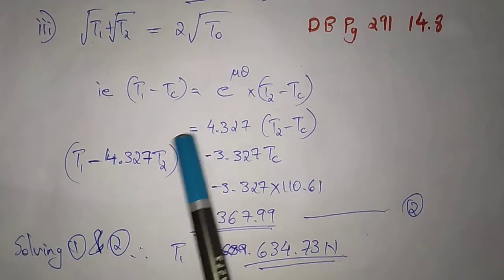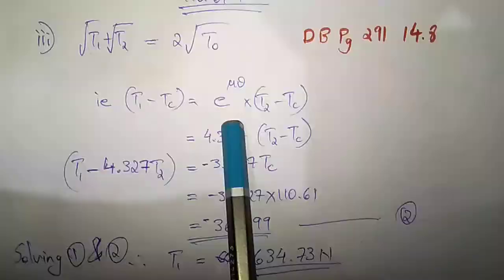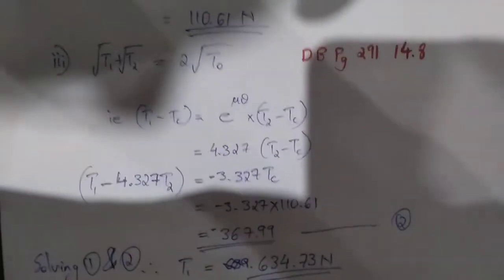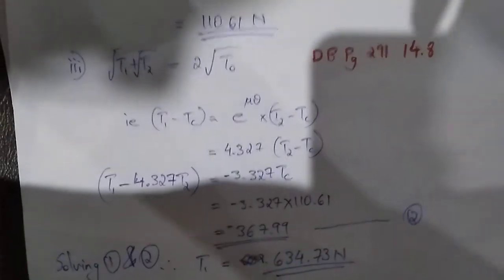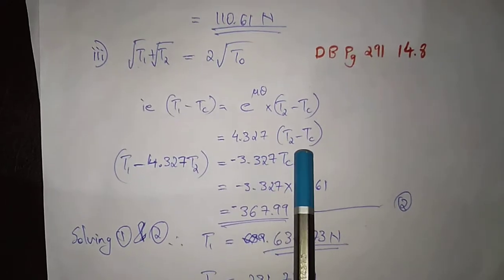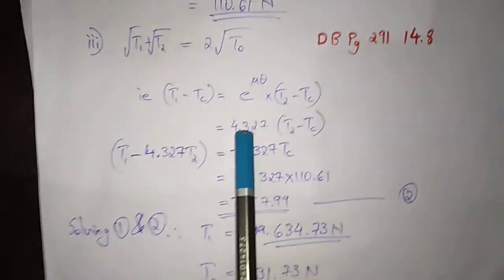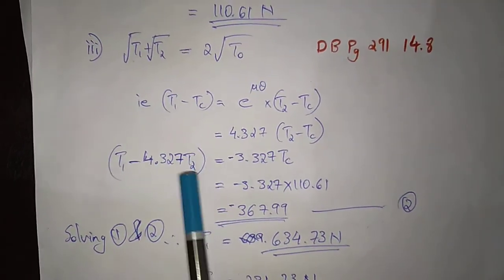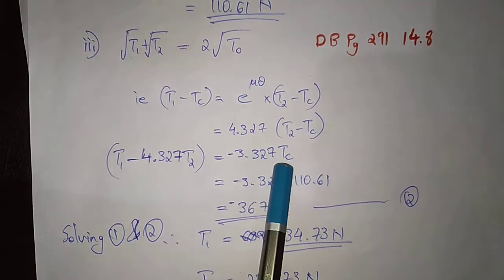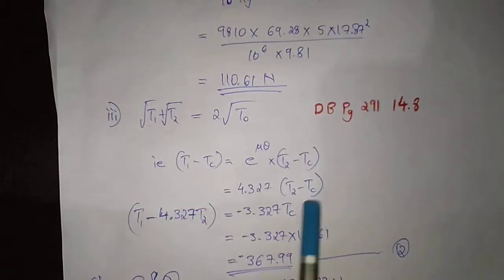This is the last step of the equation. Substituting 4.327 into (T2 minus Tc) and expanding, we open and rearrange to get: T1 minus 4.327×T2 equals minus 3.327×Tc. That is the rearranged equation.